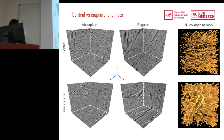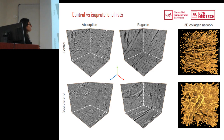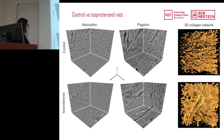We quantified the amount of collagen. In a control heart the absorption and Paganin images look similar, with Paganin being smoother but with enhanced contrast. In an isoproteinol heart expected to show fibrosis, you can see a lot of white collagen in the myocardium. When you segment and reconstruct the 3D collagen matrix, you see much denser collagen in the isoproteinol heart compared to control.